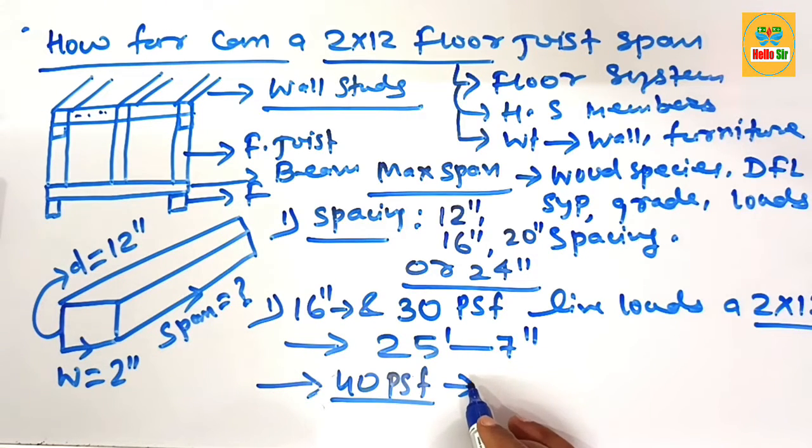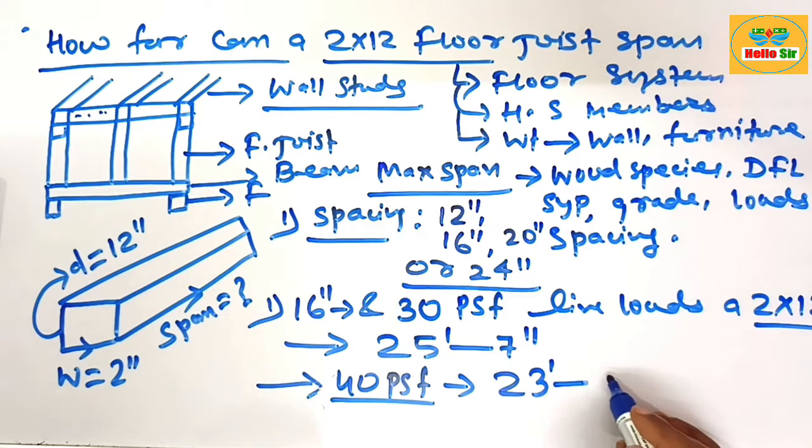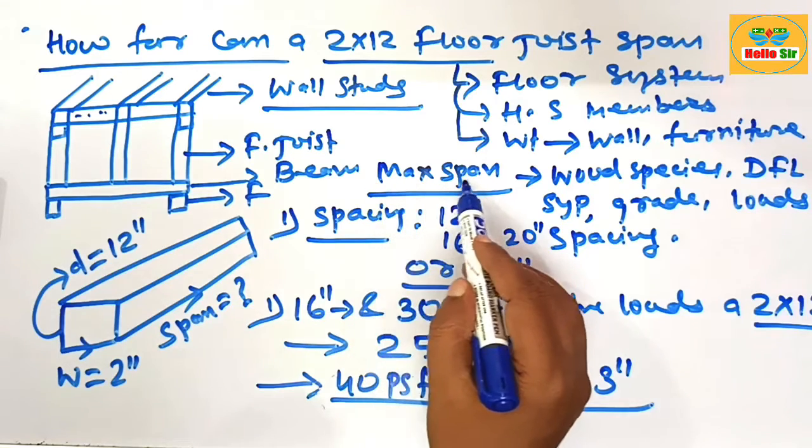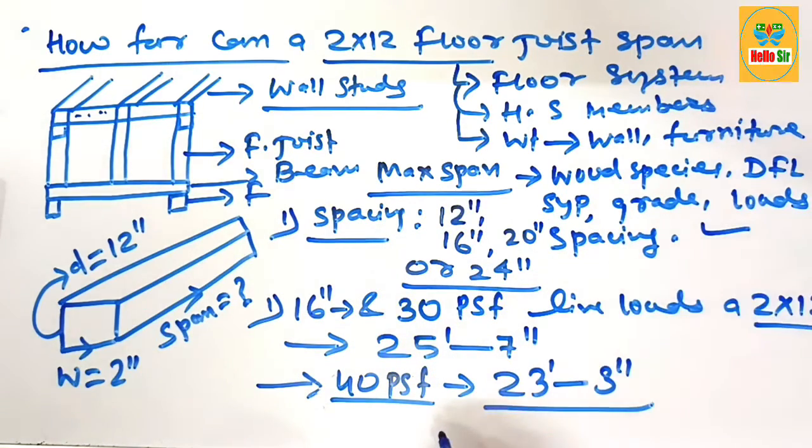Span about 23 feet and 3 inches. Remember this, but actual maximum span of floor joist depends on the conditions. Thank you.